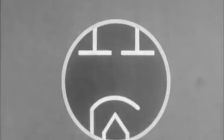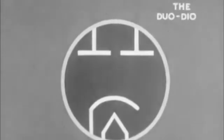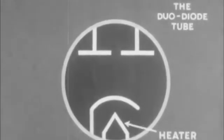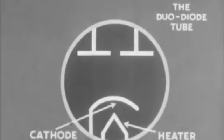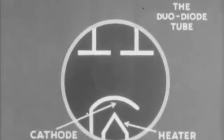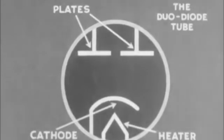For full wave rectification, a duo diode tube is used. This tube, in addition to having heater and cathode or filament, is equipped with two plates. In every other way, this tube is similar to the diode tube.